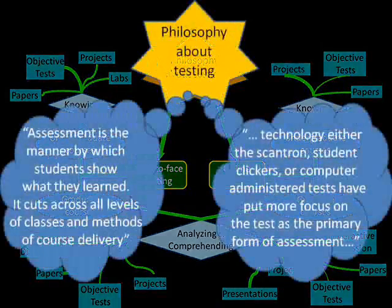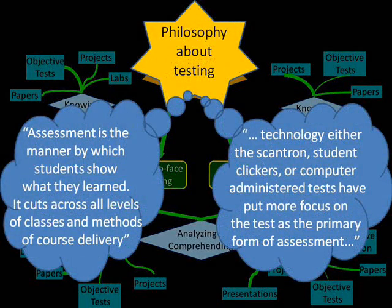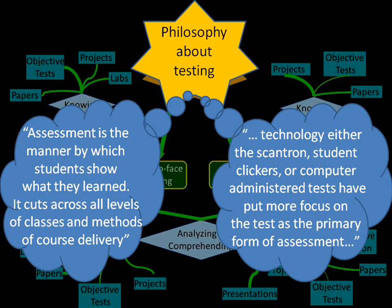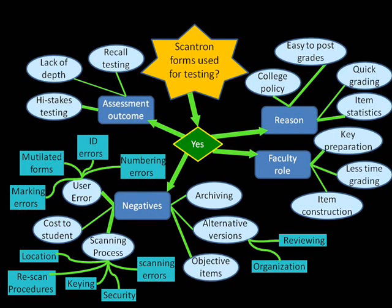Participants used a variety of assessment technologies with some differences based on their perception of the purpose of assessment in undergraduate and graduate education. The use of objective assessment measures was more commonly used in undergraduate courses. Participants' expression of the meaning of assessment included: 'Assessment is the manner by which students show what they have learned — it cuts across all levels of classes and methods of course delivery.' And another participant shared: 'Technology, either the Scantron, student clickers, or computer-administered tests, has put more focus on the test as the primary form of assessment, but we can't forget that other forms are also available to the educator.'